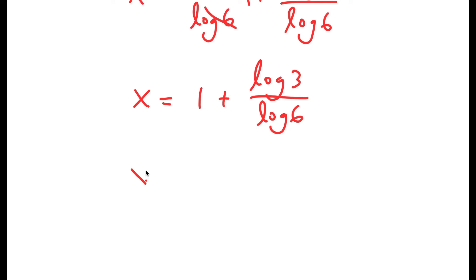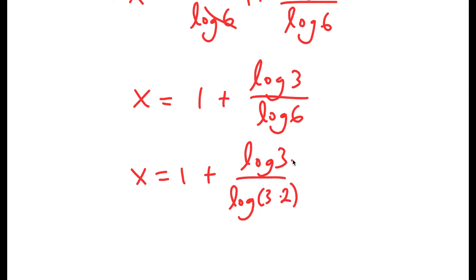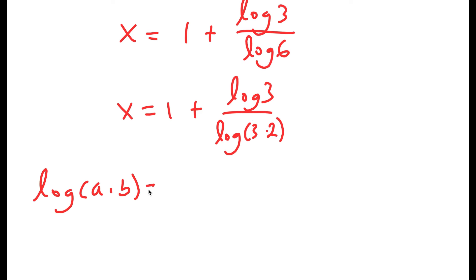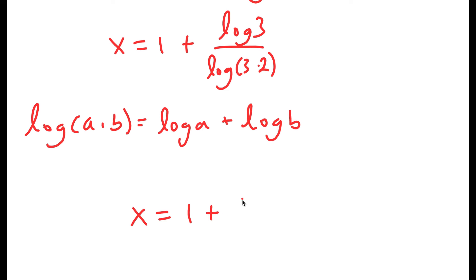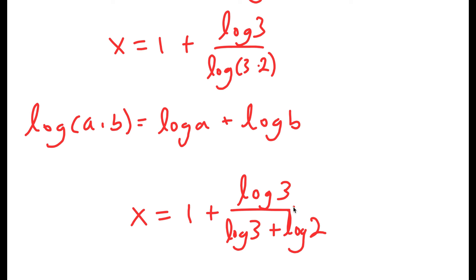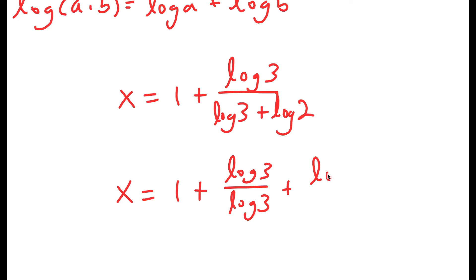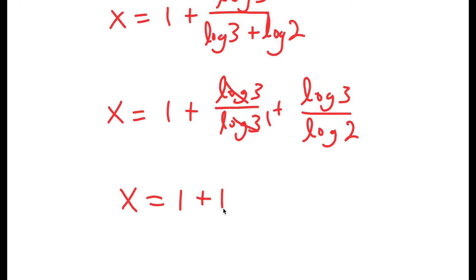And I'm going to rewrite log 6 again as log of 3 times 2. So now from here, we can reuse the property: log a times b is equal to log a plus log b. So this turns into log 3 over log 3 plus log 2, because a is 3 and b is 2. And now I get 1 plus log 3 over log 3 plus log 3 over log 2. So now these two again cancel out to get 1. So I get x is equal to 1 plus 1 plus log 3 over log 2.